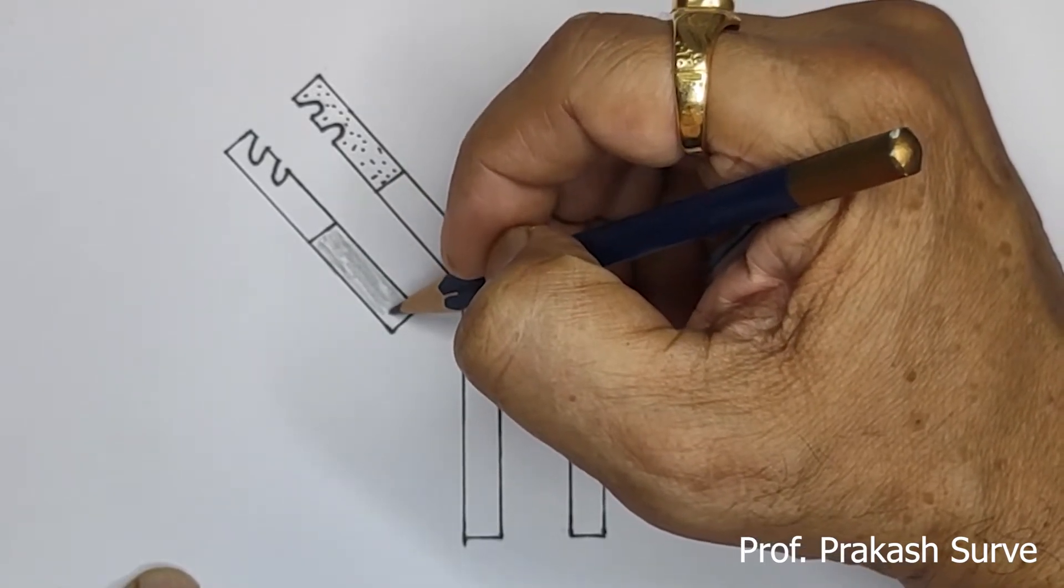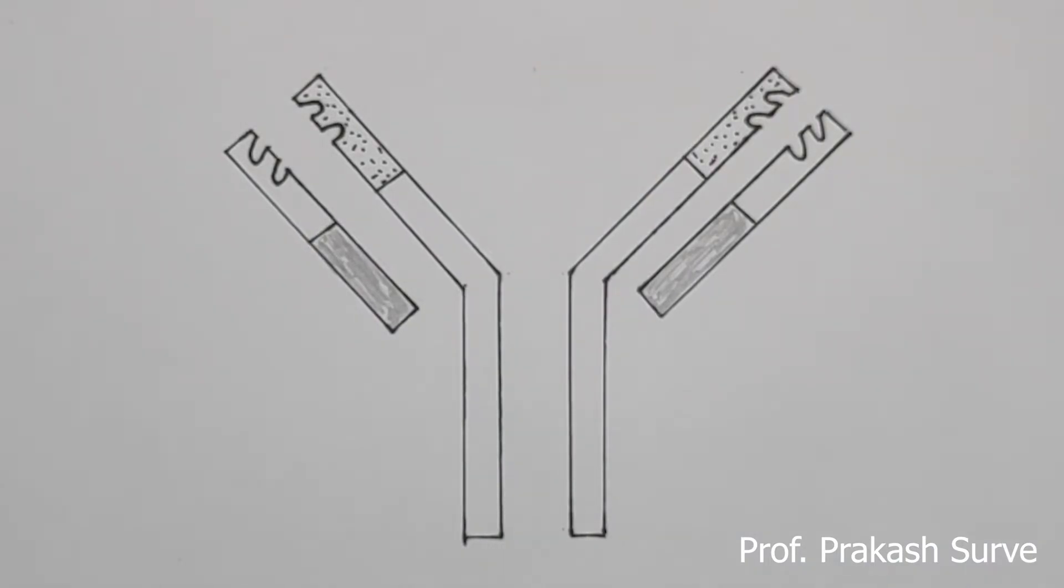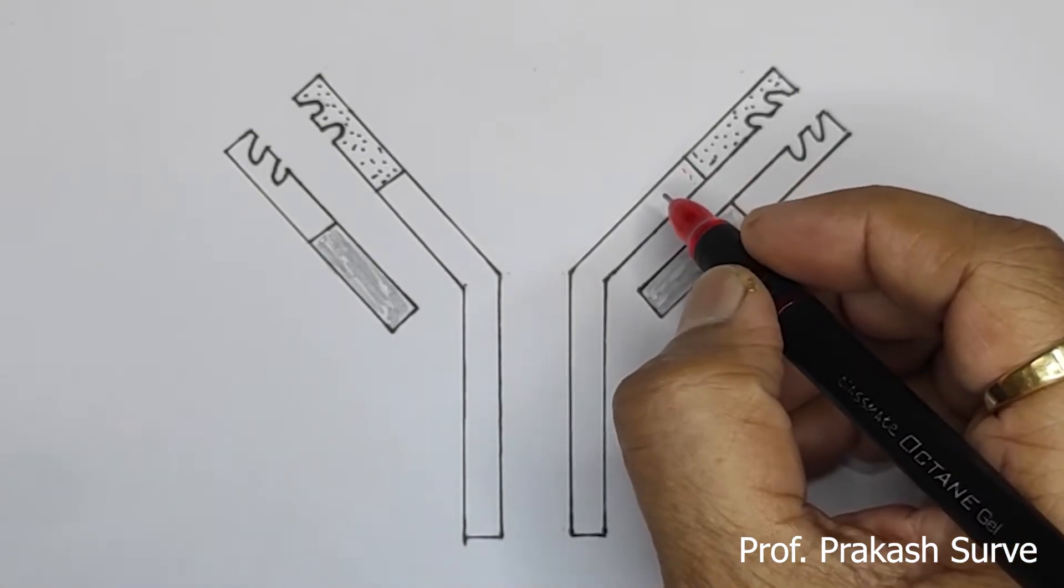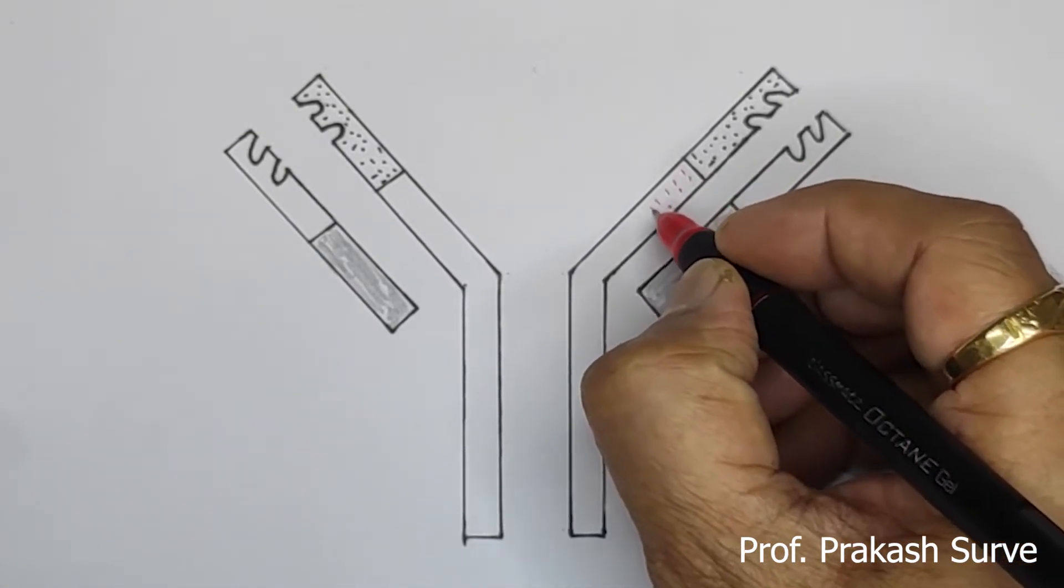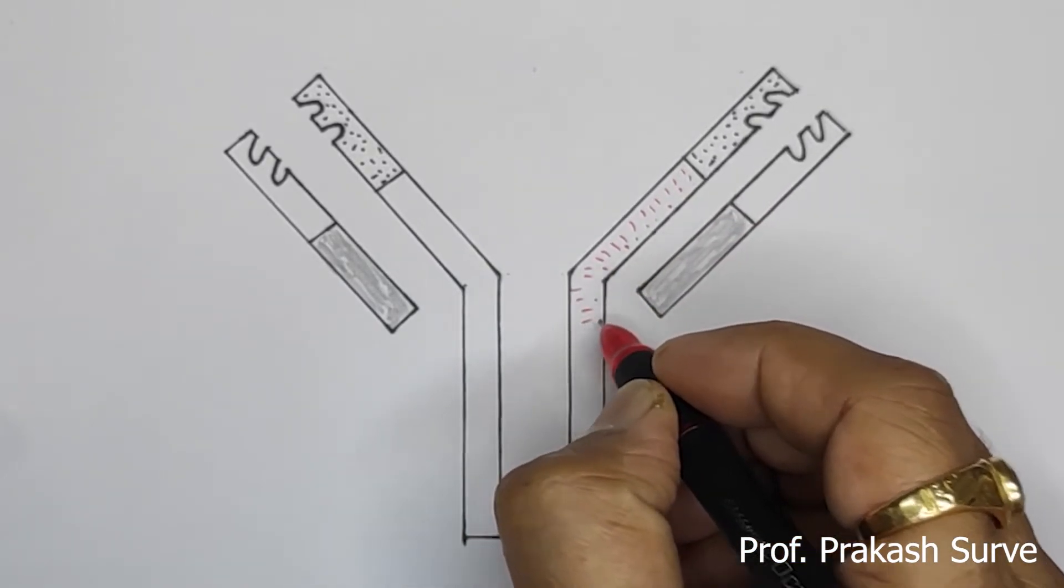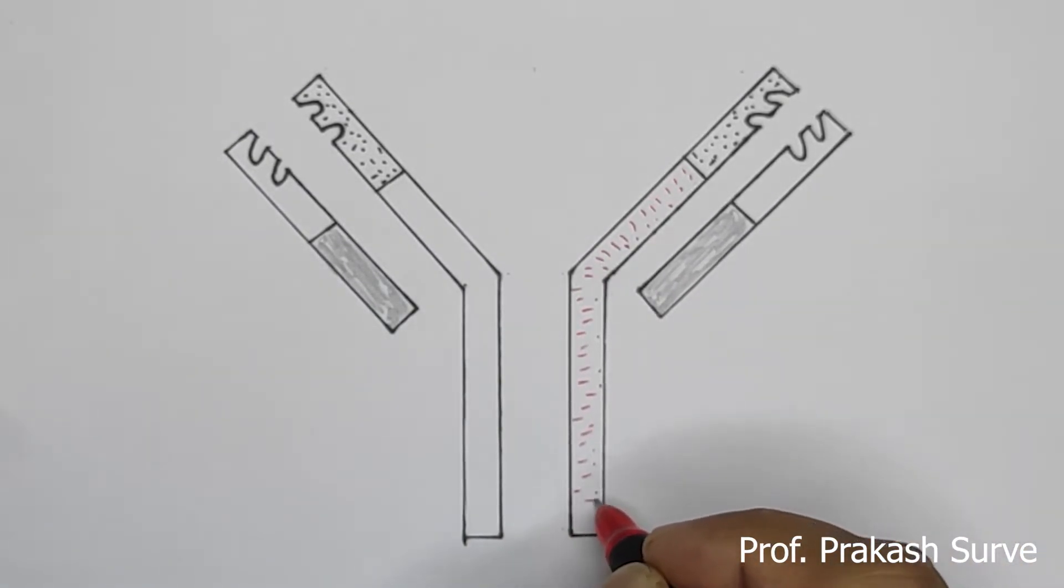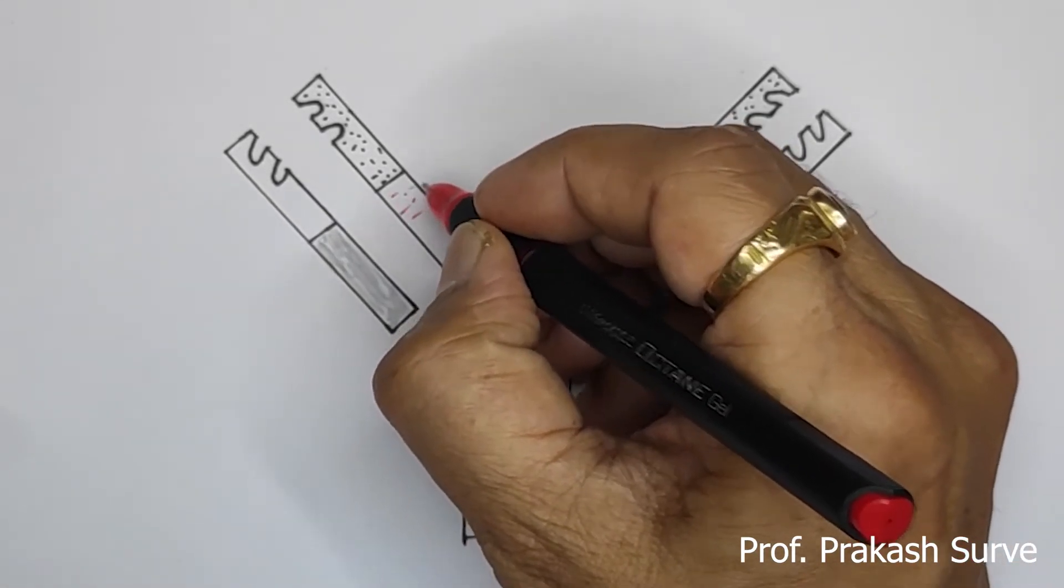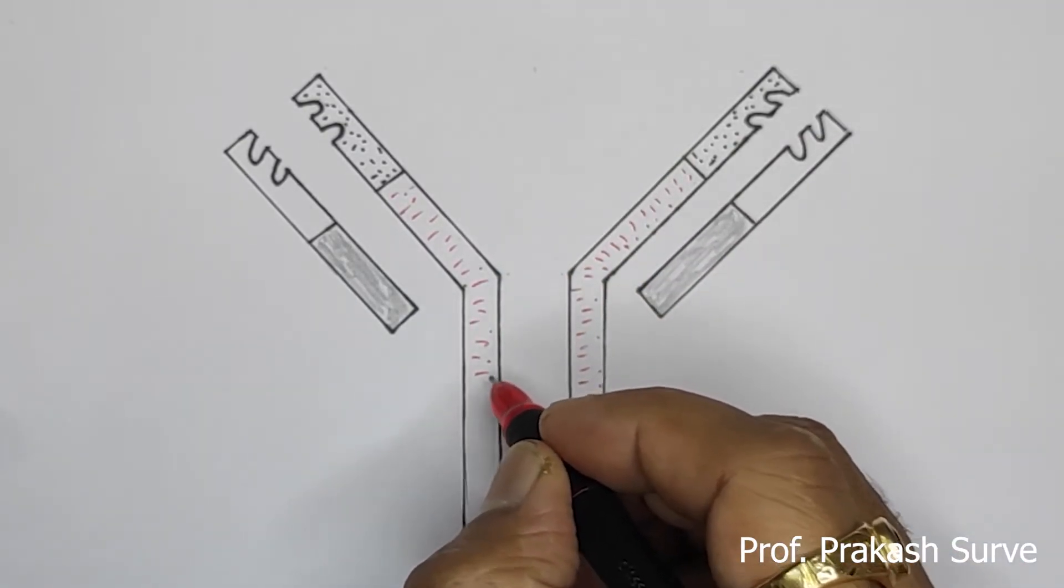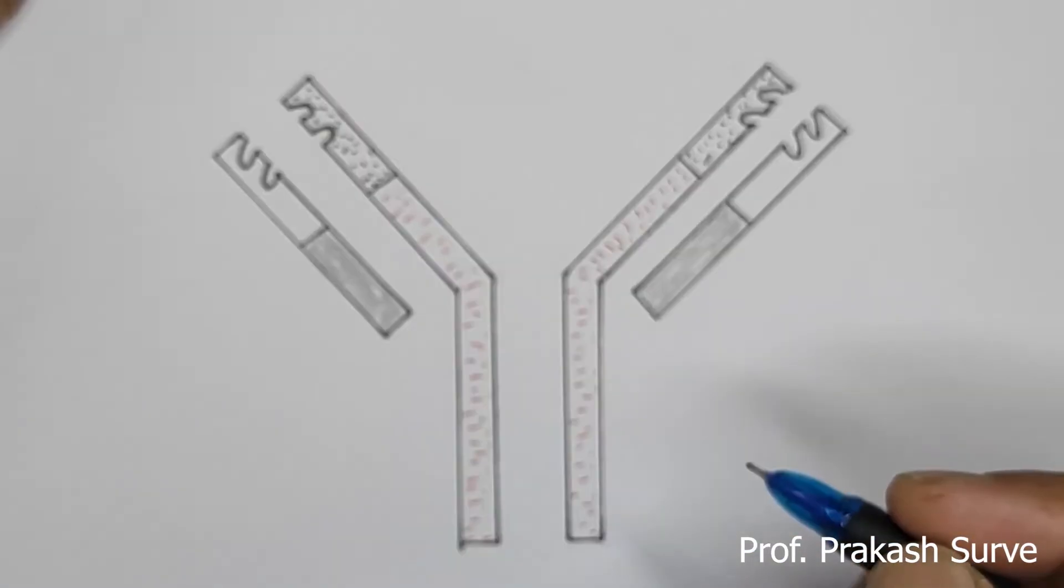Now we will make the shading further. This is the constant region of the heavy chain. Here also, now here.